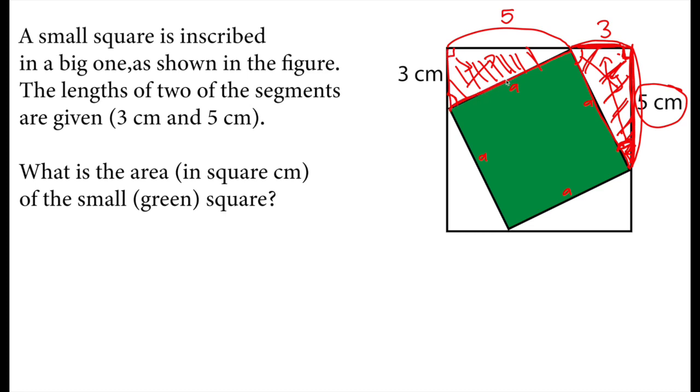Since this is a right triangle, this is 5, this is 3, and this is a. So the area of this square is a².